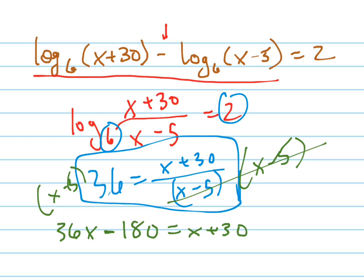Then I'm going to solve this equation by subtracting x from both sides. That gives me 35x. Adding 180 to both sides, that gives me 210. And dividing, I get x equals 6.